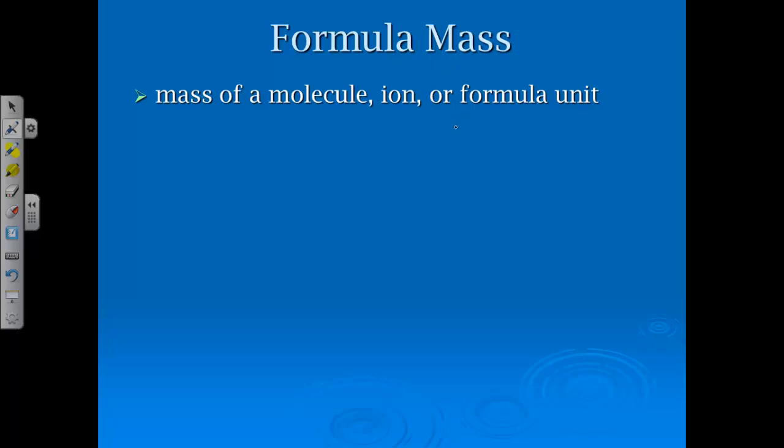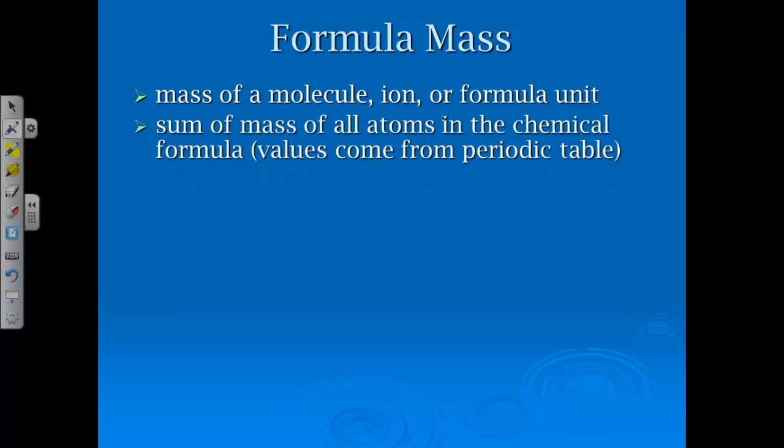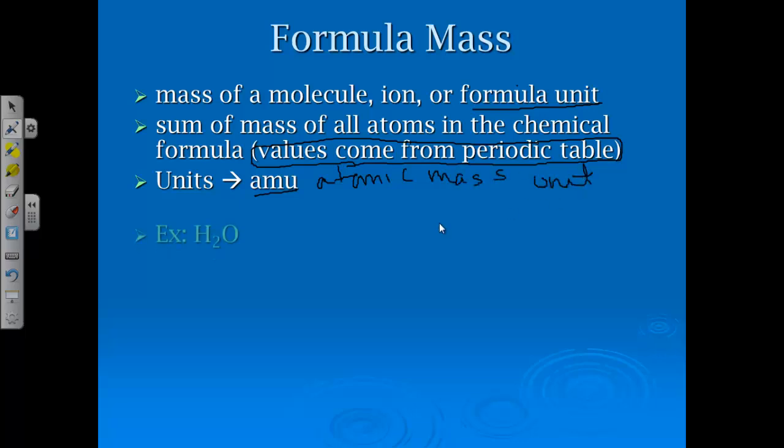Now, we've got to talk about formula mass, which in a good way, it's very close to molar mass, but it's the mass of a molecule, ion, or formula unit, which we talk about with primarily ionic compounds. It's the sum of the mass of all the atoms in the chemical formula. This comes from the periodic table, so if you don't have a periodic table, go ahead and take one out, and the units on these are AMU, or atomic mass unit, that's what that's going to stand for, which we saw earlier as well.